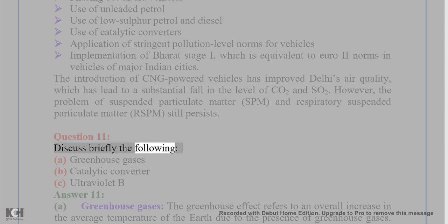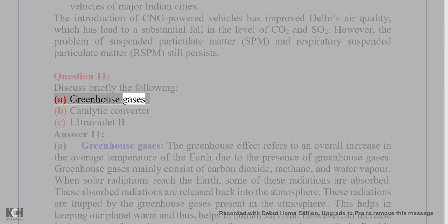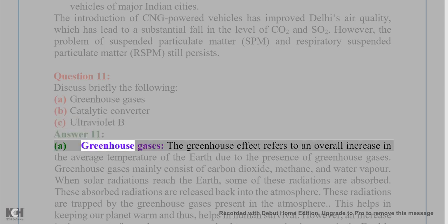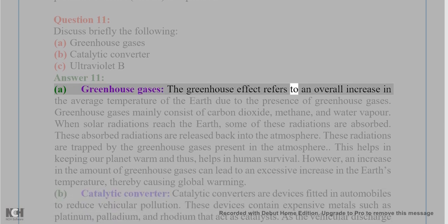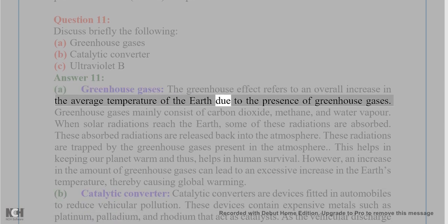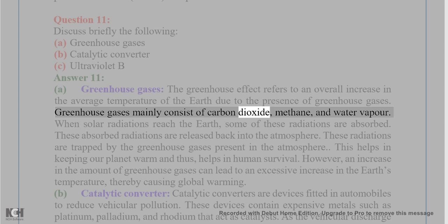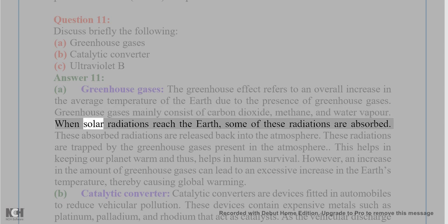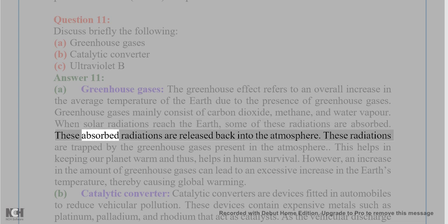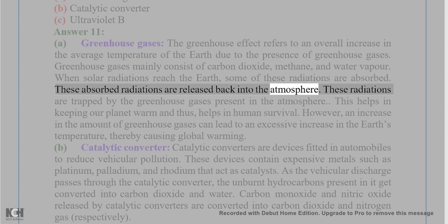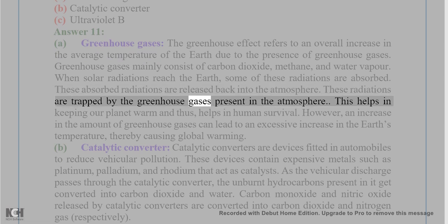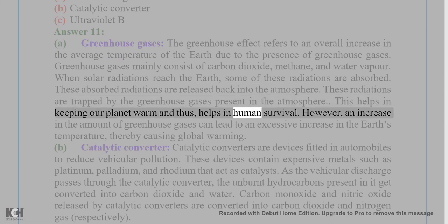Question 11: Discuss briefly: (a) greenhouse gases, (b) catalytic converter, (c) ultraviolet B. Answer: (a) Greenhouse gases: The greenhouse effect refers to an overall increase in the average temperature of the earth due to the presence of greenhouse gases, which mainly consist of carbon dioxide, methane, and water vapor. When solar radiations reach the earth, some are absorbed and then released back into the atmosphere, where they are trapped by greenhouse gases. This helps in keeping our planet warm and aids in human survival.